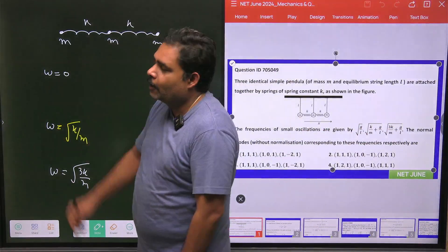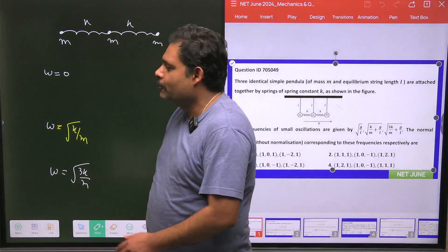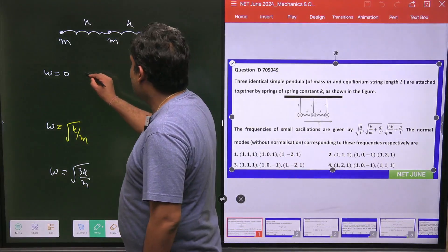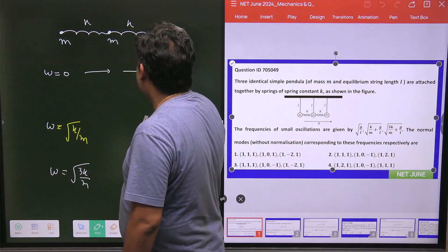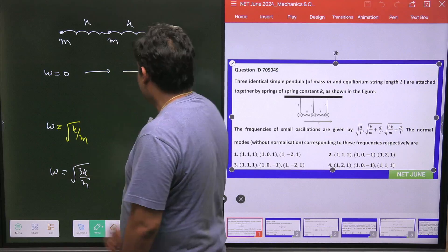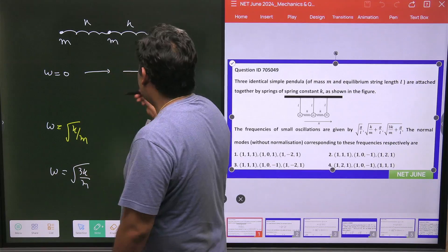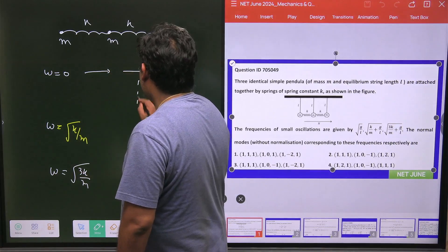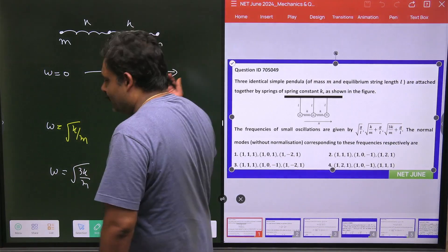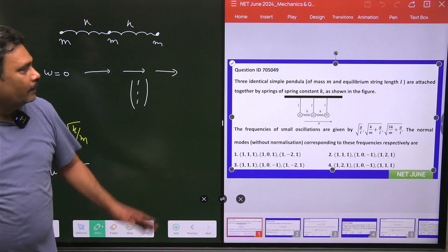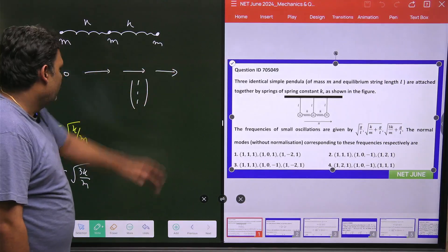What will be the normal frequency for omega equals zero? This is just a translational motion. So all the molecules will move exactly with the same magnitude and the same direction. So what will be the normal mode? That will be 1, 1, 1. If you want, you can normalize it, but it is unnormalized as given. So that will be 1, 1, 1. Both are moving in this direction.